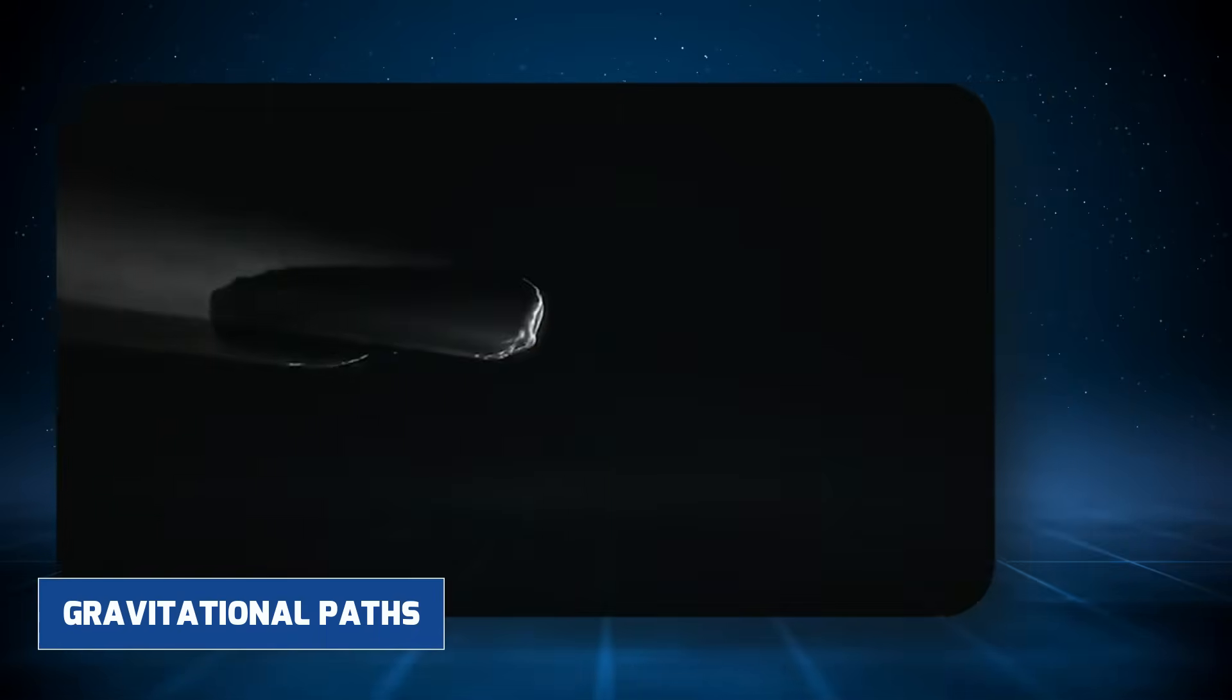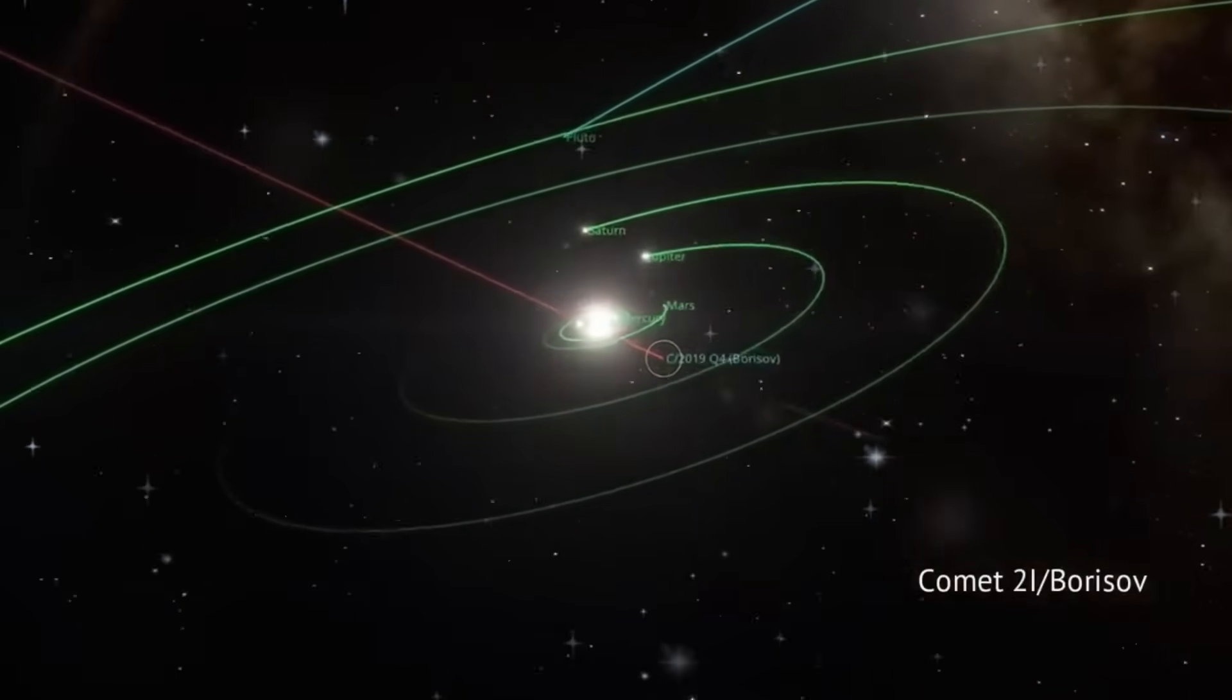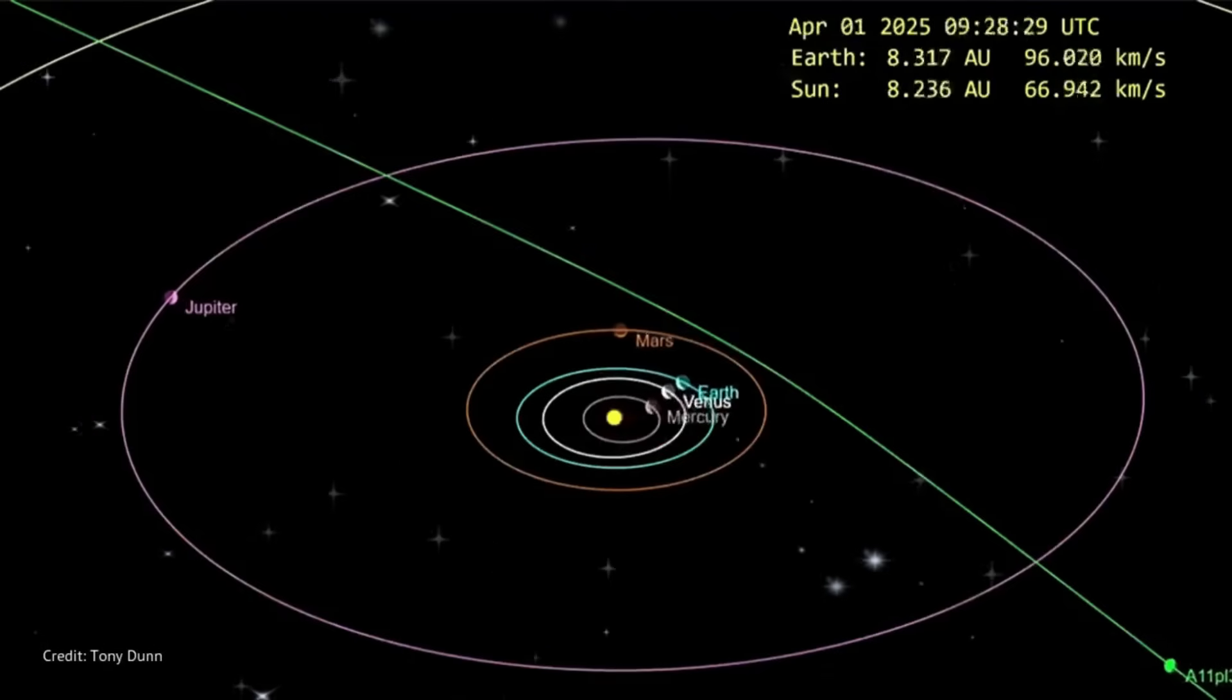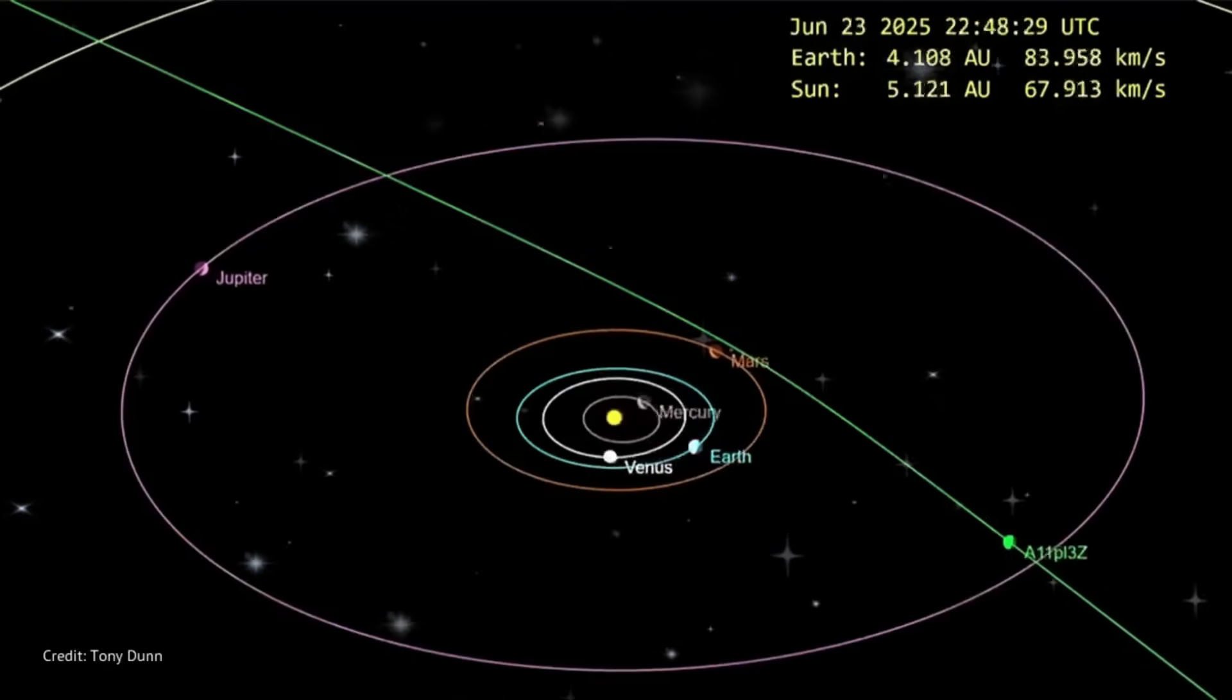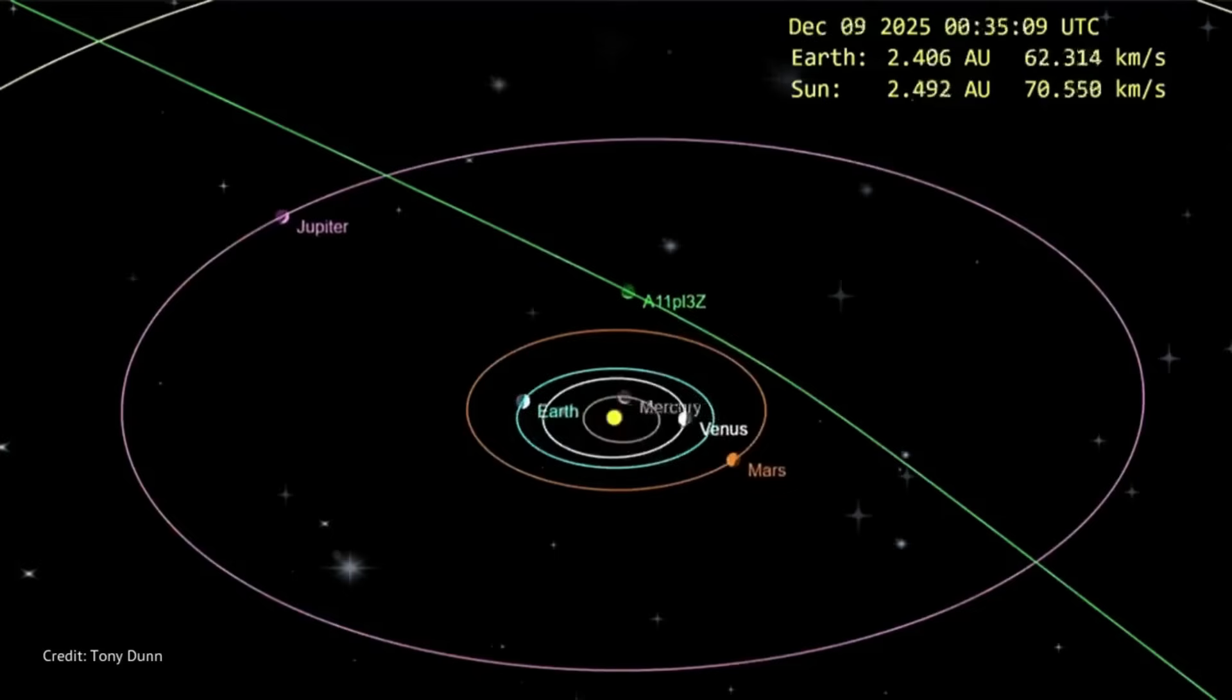What makes this event even more compelling is the fact that the returning object followed a trajectory that did not align with expected gravitational paths. After exiting the solar system, it should have continued into interstellar space indefinitely. But instead, it reversed course. Something impossible without an external force acting on it.